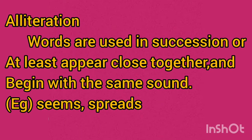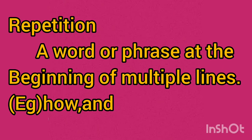Alliteration means words used in succession, or at least appearing close together, that begin with the same sound. For example: 'sings,' 'spreads.' Repetition means a word or phrase used at the beginning of multiple lines. In this poem, the poet uses the word 'how' in multiple lines as an example of repetition.